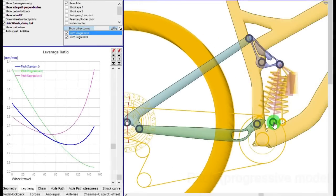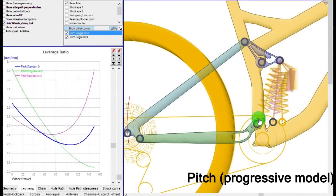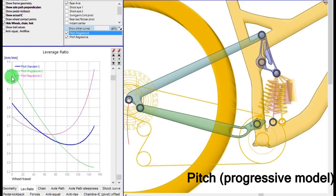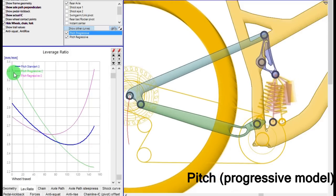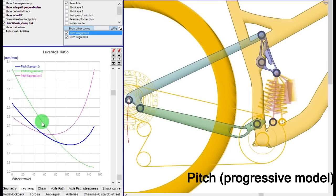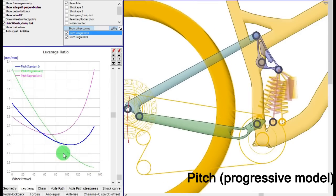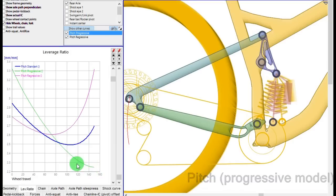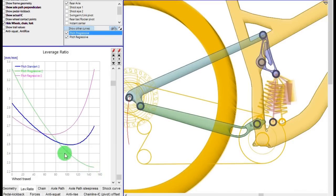Now by moving the fixed pivot of the shock three centimeters backwards, what happens is this, the green line. You have a decreasing leverage ratio line from 3.3 to 2.2.